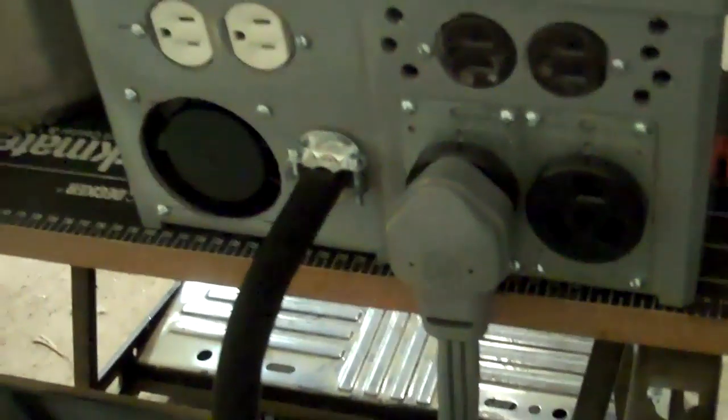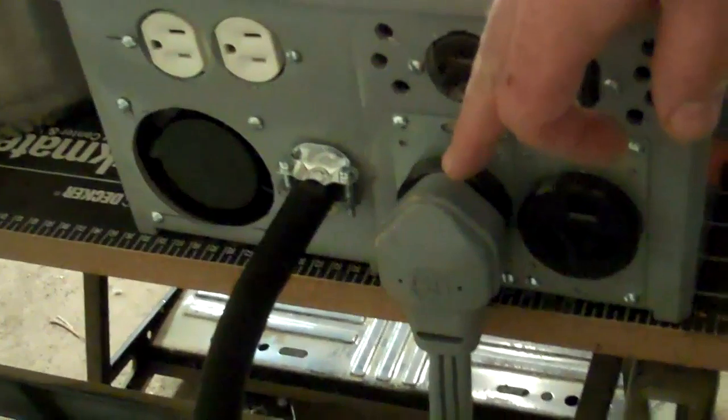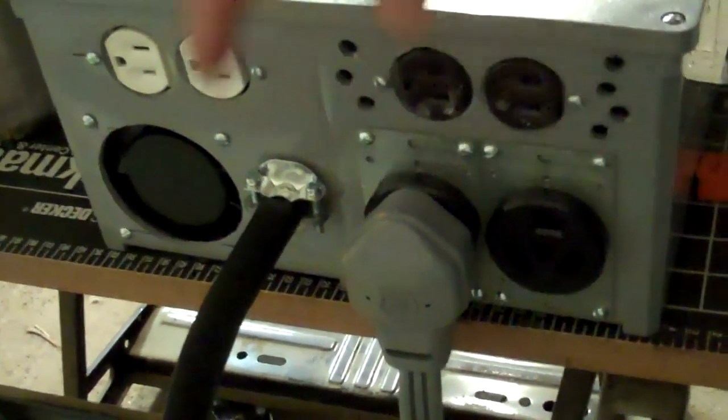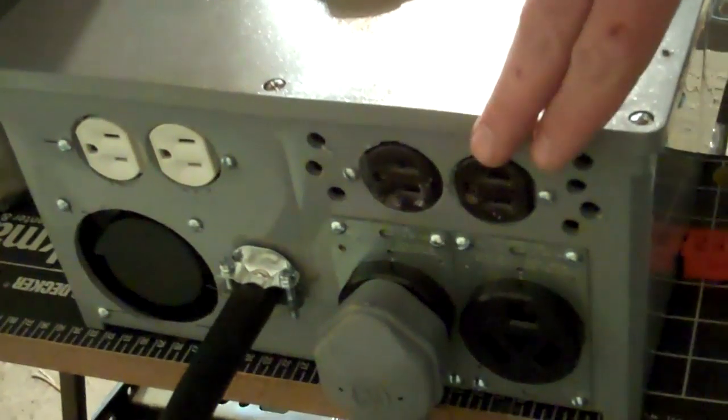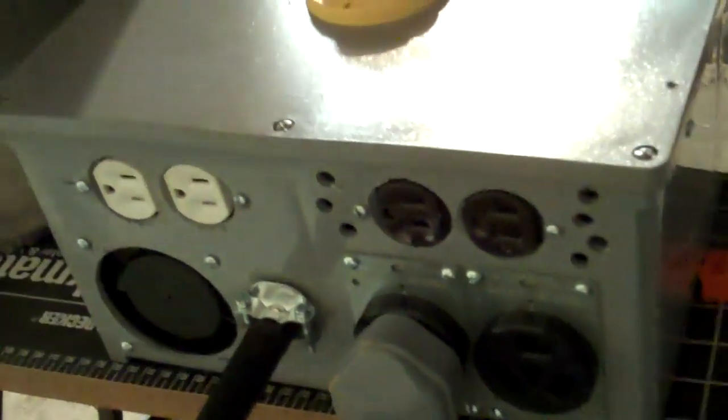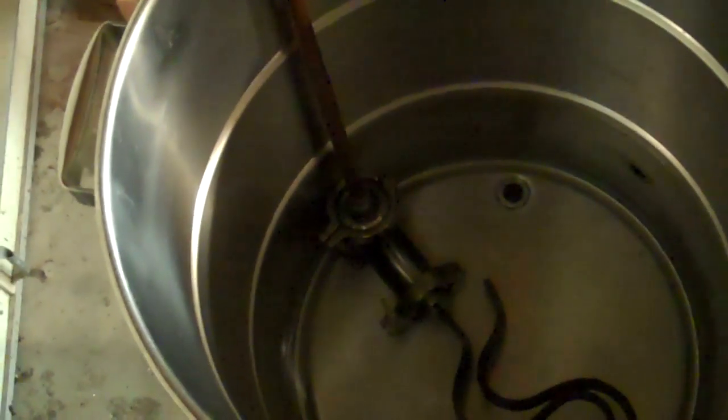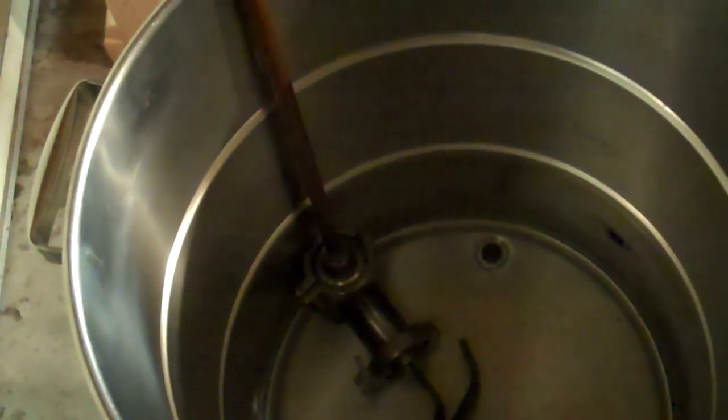If we go around back here, you can see we've got the 30 amp plug for the boil kettle, cooling fan. These are individually switched 110 volt outlets that are switched from the front. Giant on off switch. We've got about six gallons of water in there. You can just about see my heat stick at the bottom of that.